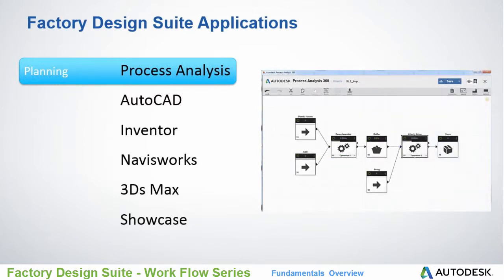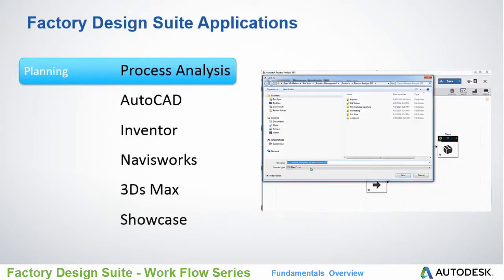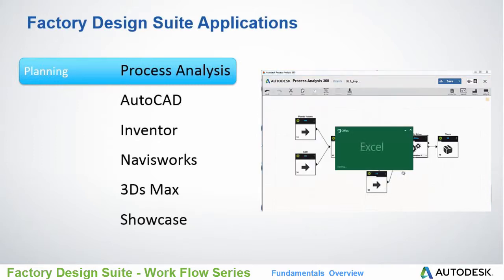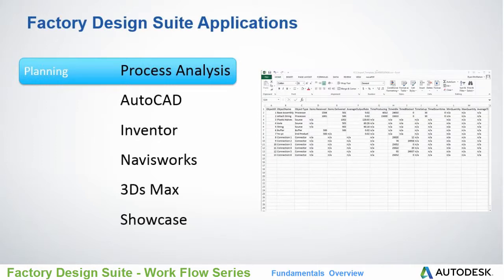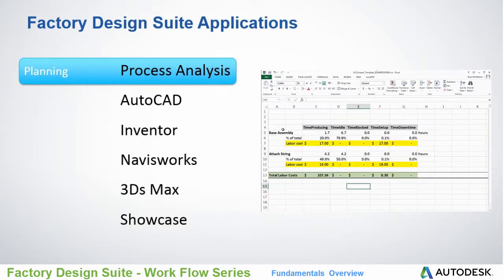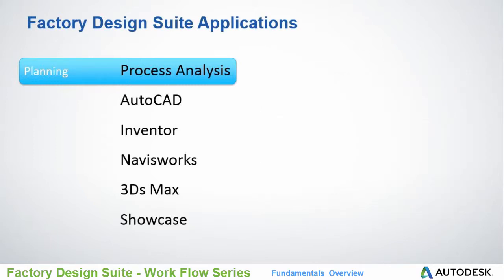Process Analysis allows you to build a logical layout and build process throughput models by applying process properties to the equipment library, called assets. Process Analysis can predict throughput, bottlenecks, and help you understand how your proposed layout will work. When complete, the application provides detailed reports that can be used to make drawings ready for plant layout.